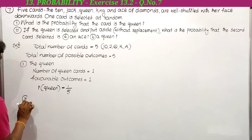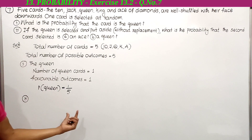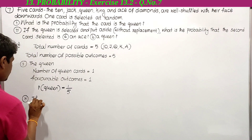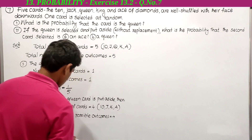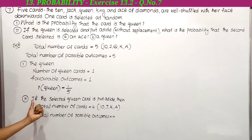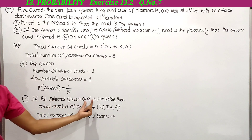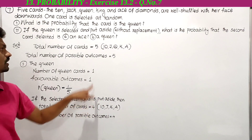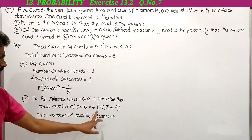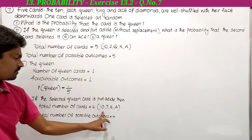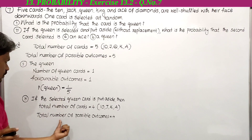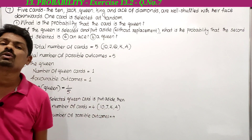For the second part: if the selected queen card is put aside, the total number of cards is 5 minus 1 equals 4. Since the queen card is no longer in the experiment, the remaining cards are 10, jack, king, and ace — only 4 cards. Therefore total number of possible outcomes equals 4.